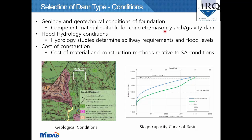Further conditions for dam type selection include the geology and geotechnical conditions of the foundation. The foundations show competent material suitable for a concrete masonry arch or gravity dam. Flood hydrology studies were carried out to determine spillway requirements and flood levels for specifying the crest height. The cost of construction — including material cost and construction methods relative to local South African conditions — was also considered.